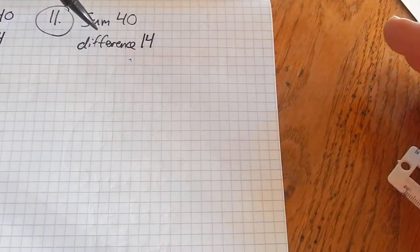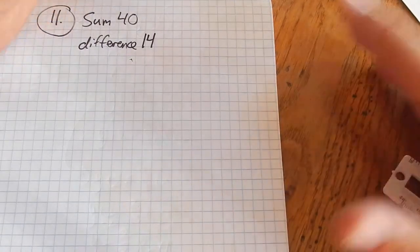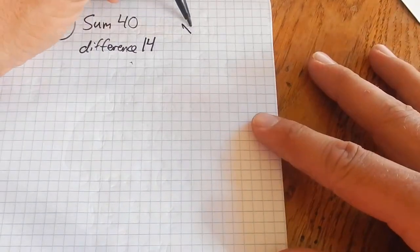We could just guess and check and get there. I'm going to use a little algebra. I have two numbers. I don't know what they are, so I'm just going to call them x and y.